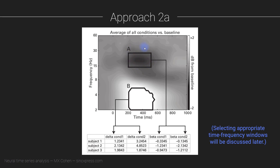That window gets applied to each individual subject and each individual condition. You average together the power values — or phase clustering, connectivity, or whatever feature you're working with — within that time-frequency window, so all the pixels in that window get averaged together to create a single number. That allows you to build up a data table where each row corresponds to a subject and each column corresponds to a different condition, for example delta-band activity from condition one and condition two, and beta-band and so on for however many regions of interest you have.